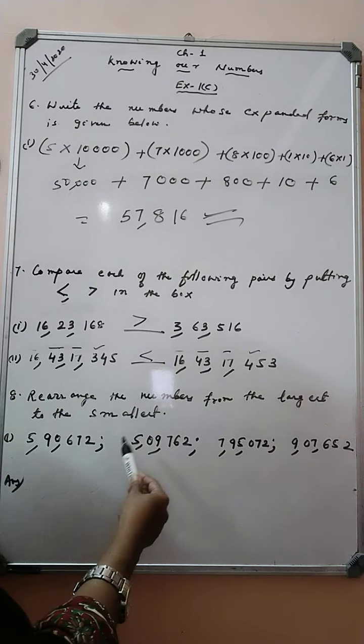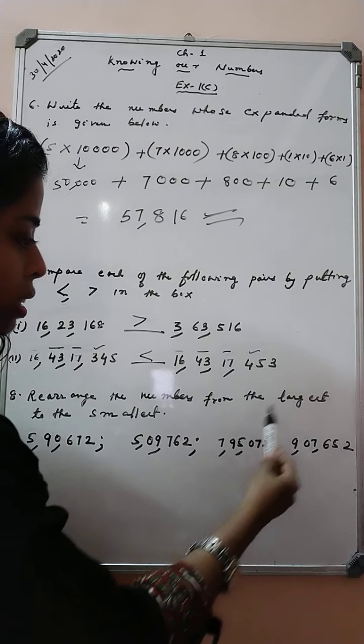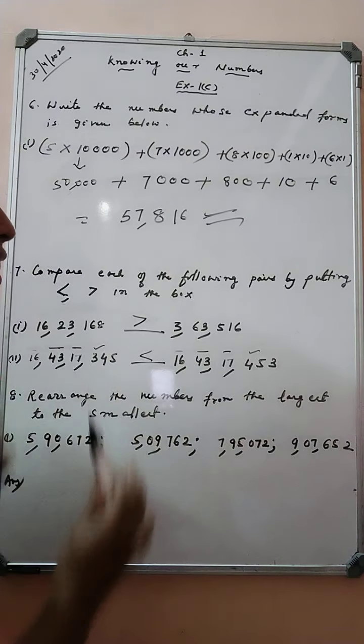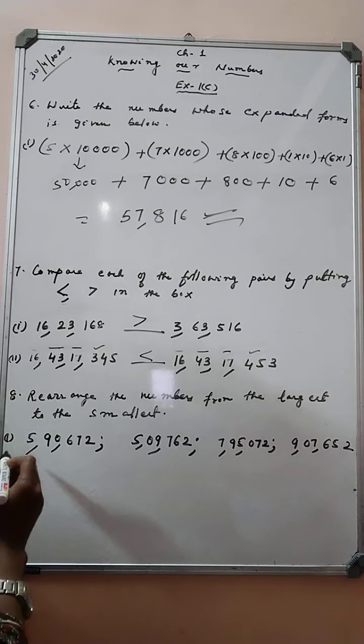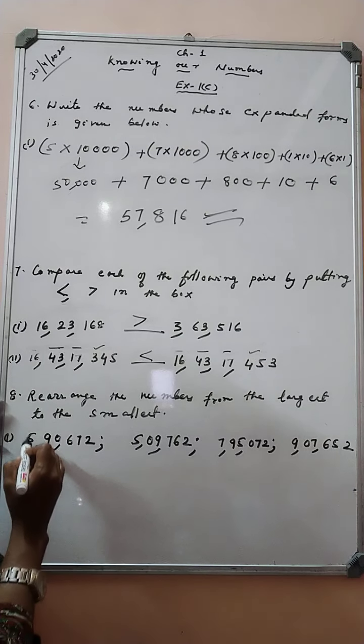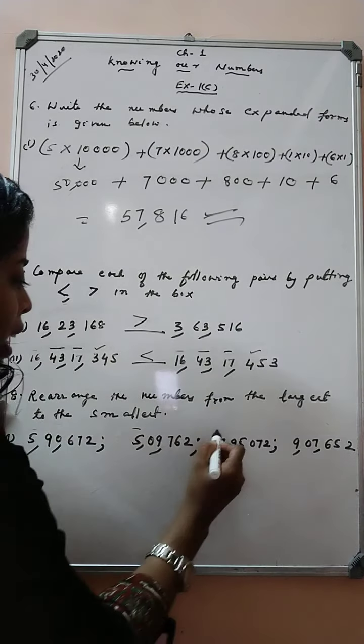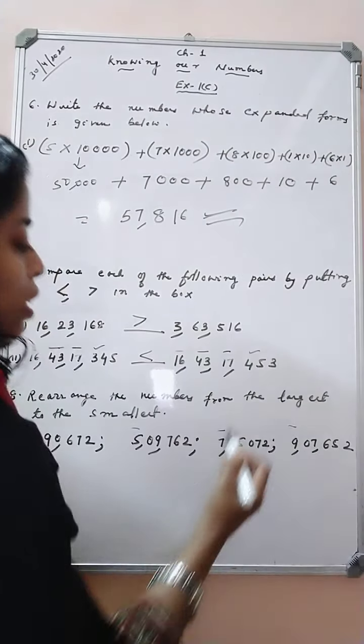Here we have 6 digits. Here we have 6. Again, here also 6. And here also 6 digits. So, let us compare the first digit from the left side. Here we have 5. Here 5. Here 7. And here 9.